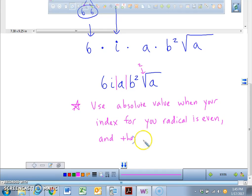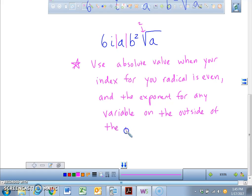And the exponent for any variable, not number, part of variable, whether a, b, c, e, x, whatever is on the outside, for any variable on the outside of the radical is odd. Key word: index is even, but the exponent for the variable is odd.